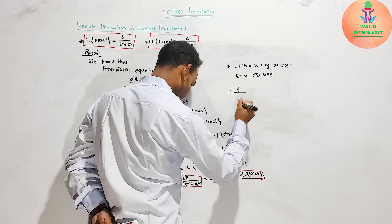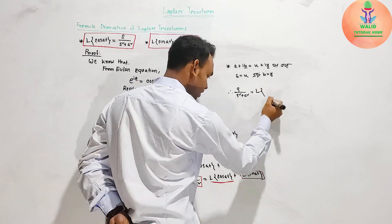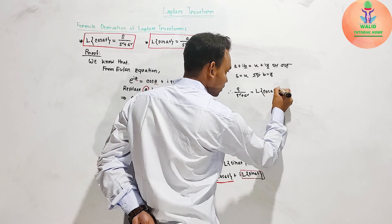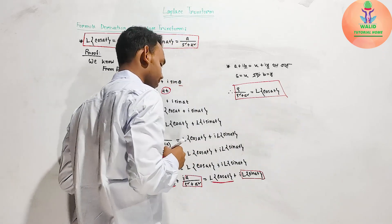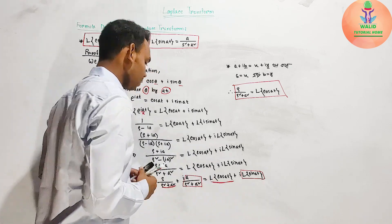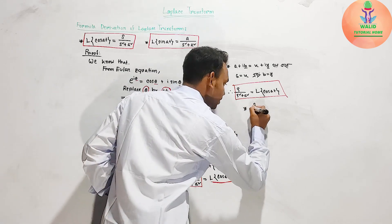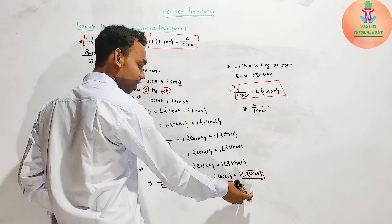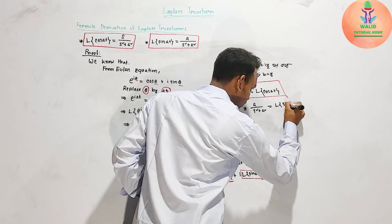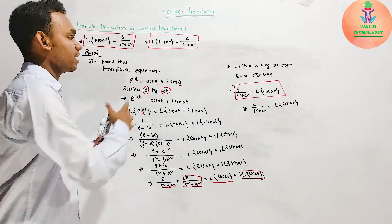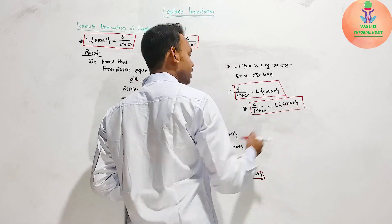Therefore, equating real and imaginary parts: the Laplace transform of cos(at) equals s divided by s² plus a², and the Laplace transform of sin(at) equals a divided by s² plus a². Thus both formulas are proved using the Euler equation.